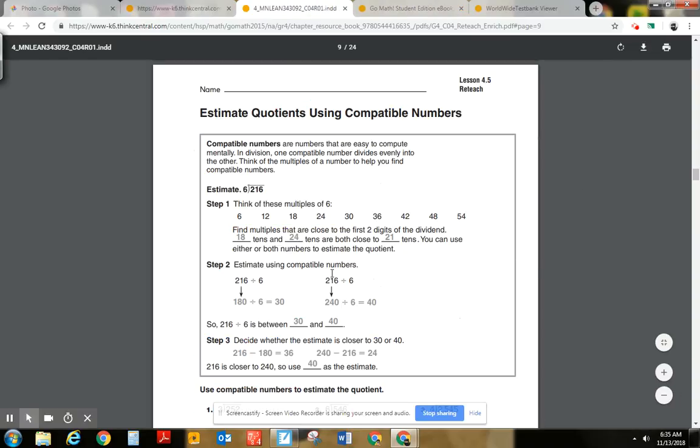So I'm going to go through this reteach page with you. And so it starts us off with this problem right here: 216 divided by 6. So we're going to estimate. Now the first step is to list the multiples of 6. So 6, 12, 18, 24, 30, 36, 42, 48, 54. We can even have 60 and then 66 and even 72.